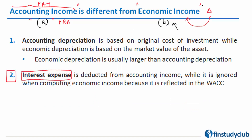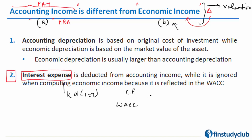Conceptually, economic income is more of a valuation parameter. It considers that your interest cost, which is essentially KD times (1 minus T), is not part of your cash flows but is part of the discount rate used to discount the cash flows. Hence, to avoid double counting, it doesn't impact the cash flows — the same logic we use in calculating CFAT, cash flow after taxes, for capital budgeting.